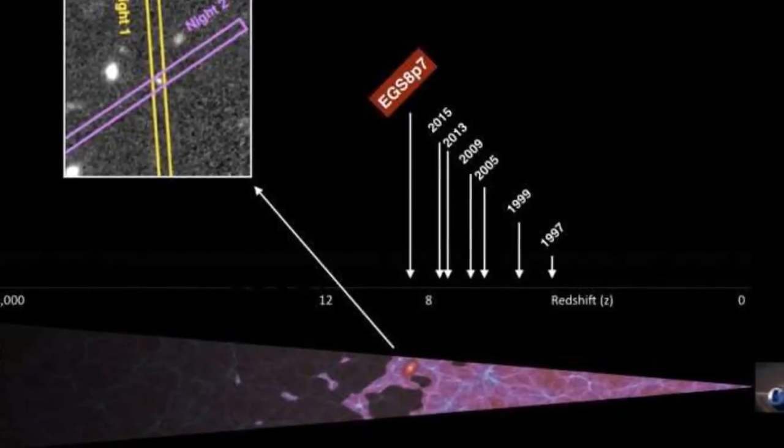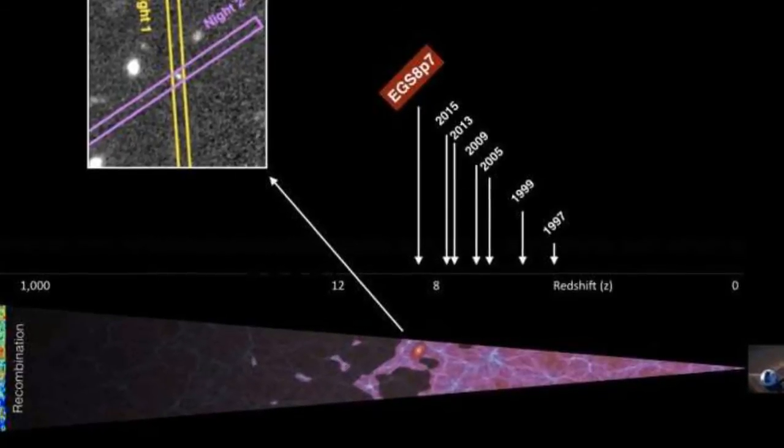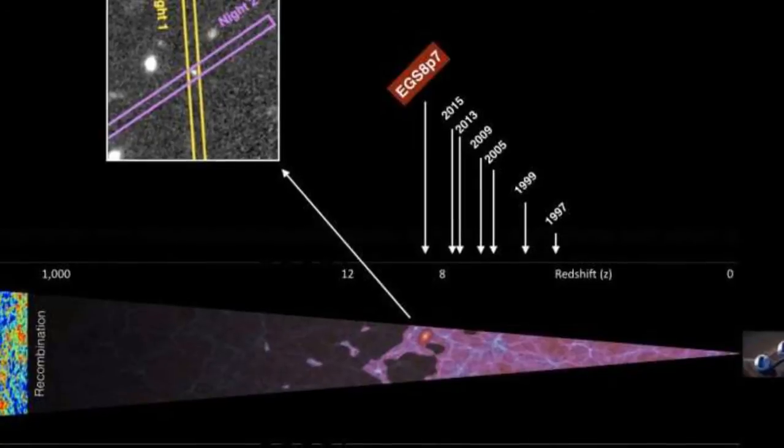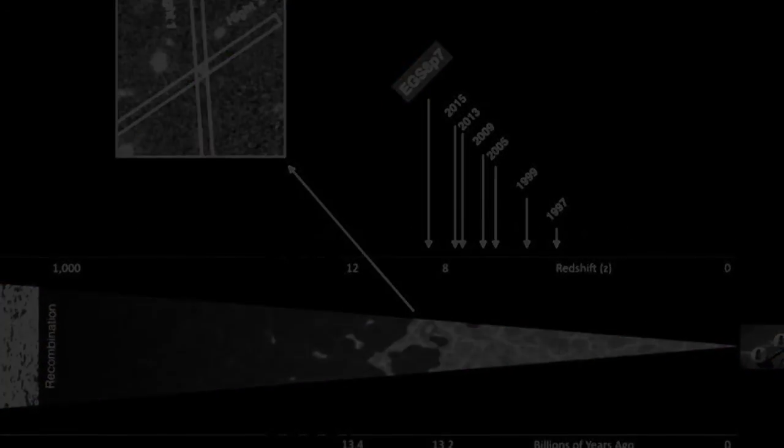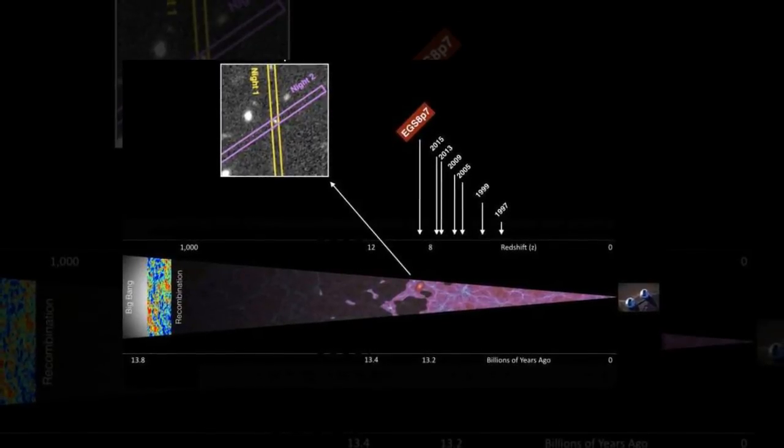"We frequently see the Lyman-alpha emission line of hydrogen in nearby objects as it is one of the most reliable tracers of star formation," said California Institute of Technology (Caltech) astronomer A.D.I. Zitron, lead author of the discovery paper.